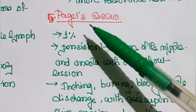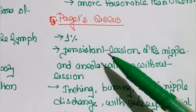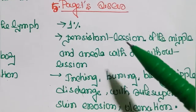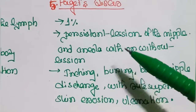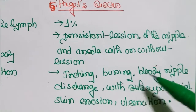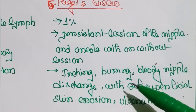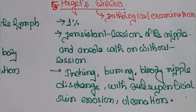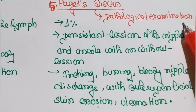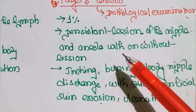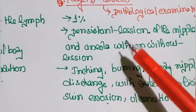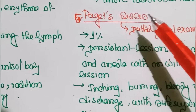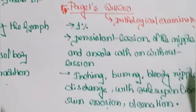Paget's disease of the breast accounts for one percent of diagnosed breast cancer cases. It is characterized by persistent lesions of the nipple and areola. Signs and symptoms include itching, burning, bloody nipple discharge, with superficial skin erosion and ulceration. For detection, pathological examination is necessary, as nipple changes are often misdiagnosed as infection or dermatitis, leading to treatment delay. Management includes surgical removal of involved tissue and radiation therapy.